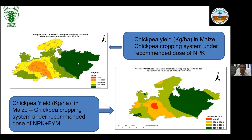Integrated nutrient management — adding organic manure in addition to inorganic fertilizers — significantly improves soil health, crop yield, and carbon content. We have seen from our long-term experiments of 45 years at different parts of India that integrated nutrient management not only improves soil health and crop yield but also carbon content. It is very much important and we are encouraging farmers to adopt integrated nutrient management practices.